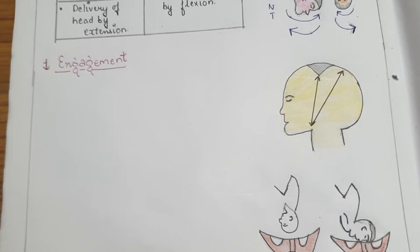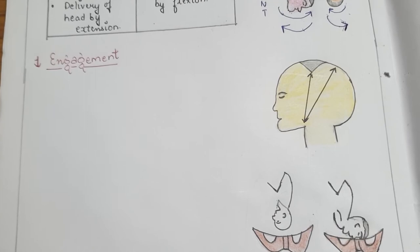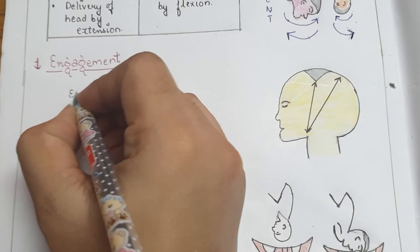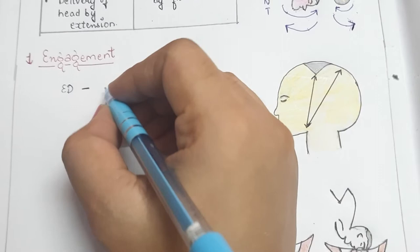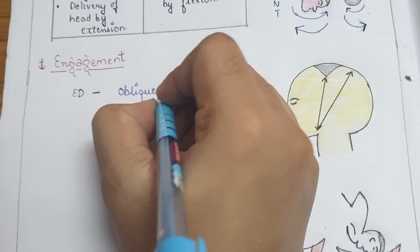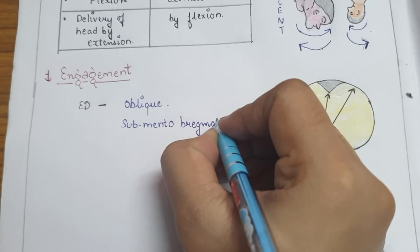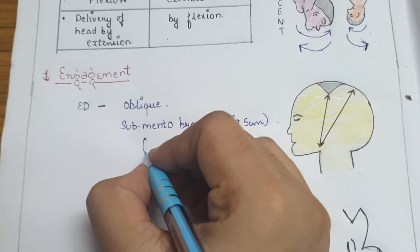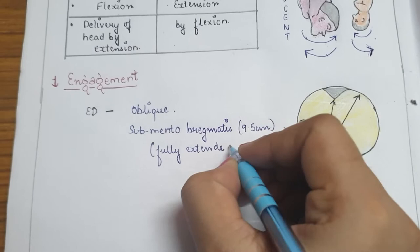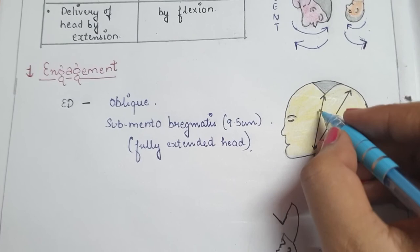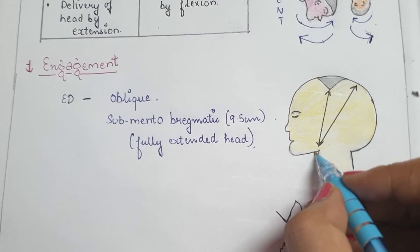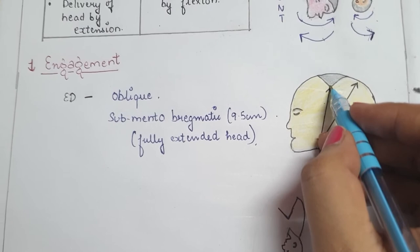Engagement occurs when the presenting part enters into the pelvic brim. The engaging diameter is the oblique diameter — specifically the submentobregmatic diameter, which is 9.5 centimeters in a fully extended head. This is measured from the point where the chin and neck meet to the mid of the anterior fontanel, and equals 9.5 centimeters.